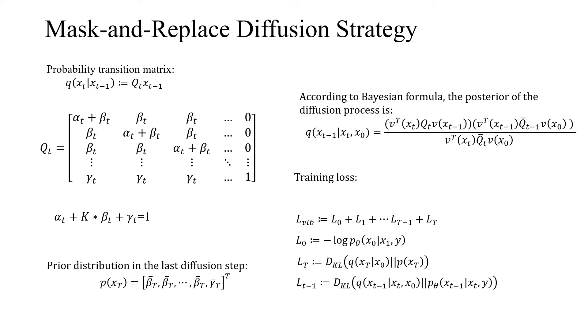Different from diffusion models in continuous space, in discrete space, the diffusion process is not adding Gaussian noise but leveraging a Markov transition matrix Q. Inspired by mask language modeling, we propose the mask and replace transition matrix. For an input token in time step t, it has the probability of alpha_t plus beta_t to keep the same, and beta_t to replace by another token. Besides, it also has gamma_t probability to be replaced by a mask token. Please refer to our paper for more details.